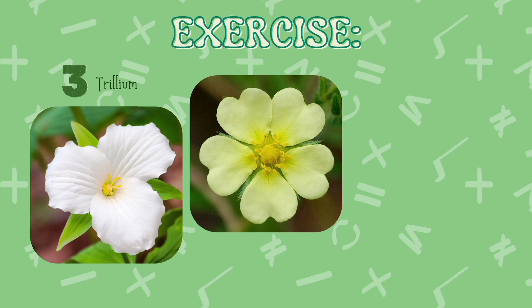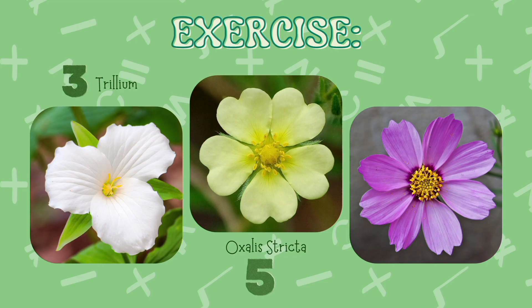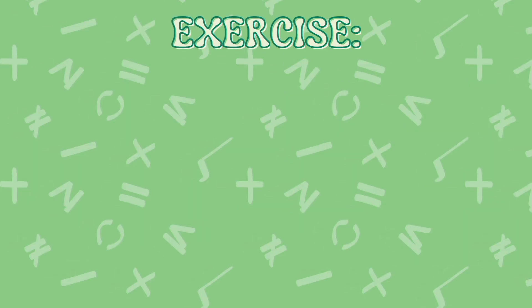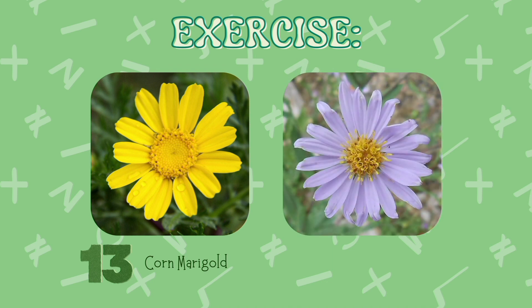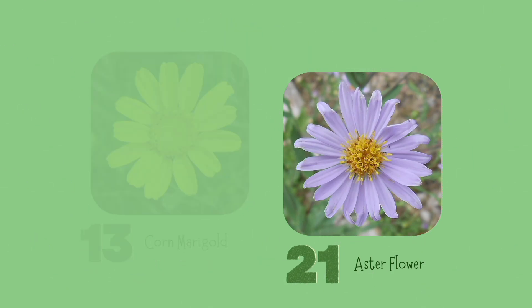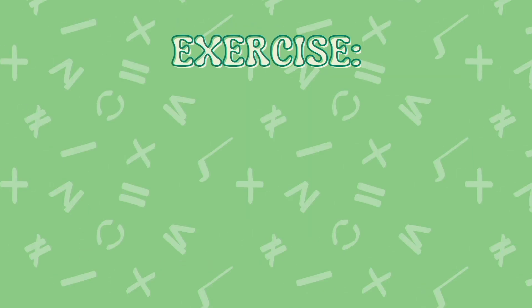Next, this is a 5-petal flower called Oxalis Tricta. Next one is 8-petal flower called Cosmos Flower. This flower is called Corn Marigold with 13 petals. And lastly, this is a 21-petal flower called Aster Flower.